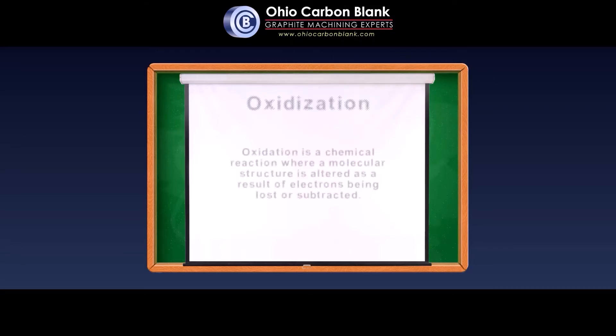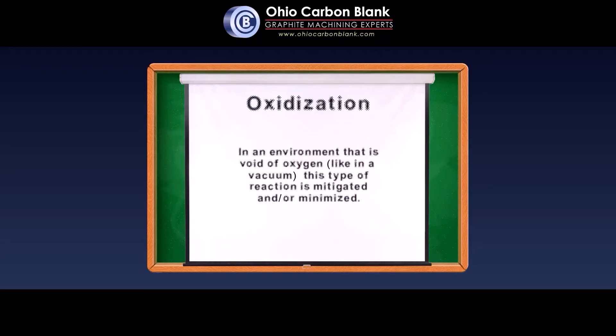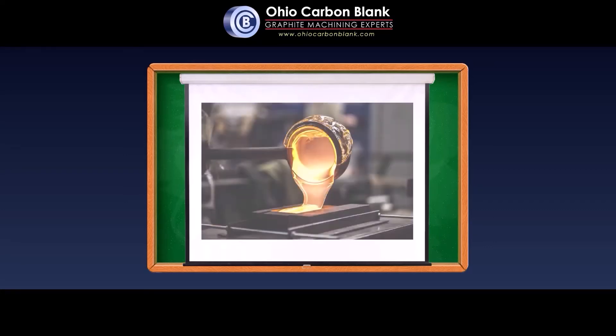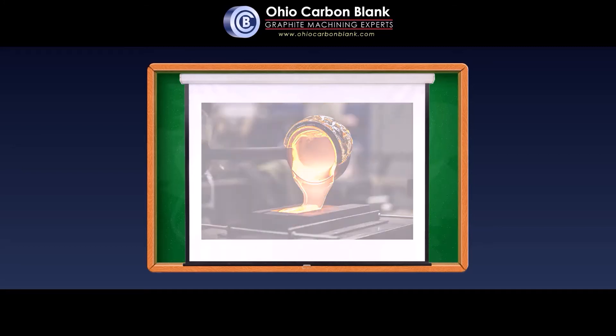With that said, most graphite materials will begin to oxidize around 1,000 degrees Fahrenheit, but this oxidization threshold grows to be five times that amount in a controlled vacuum furnace environment. As a result of this high melting point, graphite is often used to house, transfer, and cast molten materials.